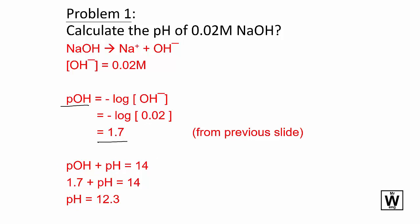And then we can use that formula that we got from the Kw turned into a pKw. pH + pOH is 14, so we just sub that number in there and our pH will equal 14 - 1.7, which is 12.3. And so you can see that's a very easy way to convert between the pHs and the pOHs.